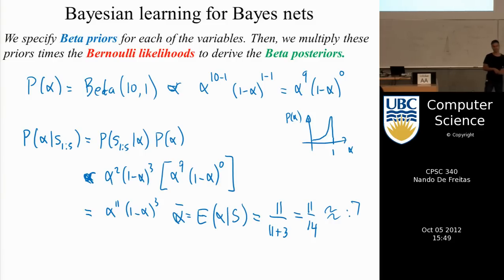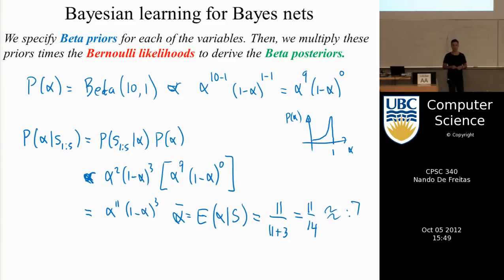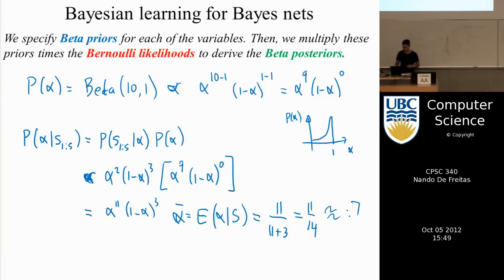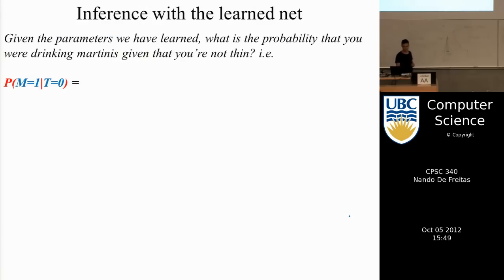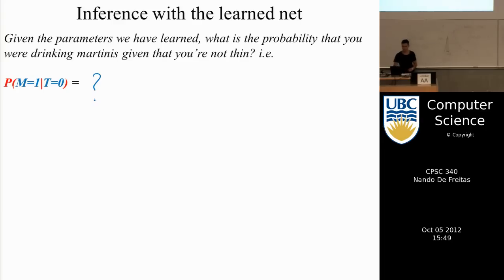This is a tedious exercise, and in the next homework I'll ask you to do this for one graph. If you want to practice, start doing the remaining parameters. This is good material for tutorials. Once you have all the parameters, you can fill in the tables and answer probability queries.